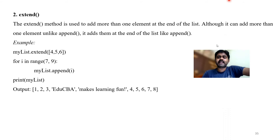Next is length. Length gives how many elements are present in the list. For example, len(my_list) — if you count 1, 2, 3, 4, 5, 6, 7, 8, 9, 10, total we have 10 elements, so the length is 10. Next, minimum and maximum: min(my_list) gives 1, which is the minimum. max(my_list) gives 5, which is the maximum.